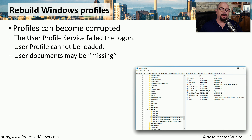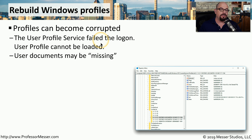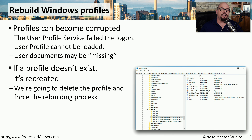If you work in a Windows domain environment, you may occasionally have to rebuild a Windows profile. Each user has a saved profile on the Windows domain, and that profile can be used to move from computer to computer with the user's settings and files following them. If the profile is ever corrupted, you may find messages saying the user profile service failed the logon, or that the user profile cannot be loaded, or the user's files may no longer be listed on their desktop. To resolve these problems, you would need to recreate the profile. There's no easy way to repair a profile, but if you delete it, a new profile will be created the next time the user logs in.